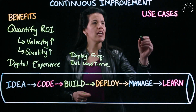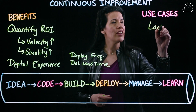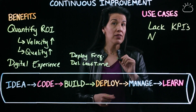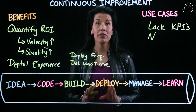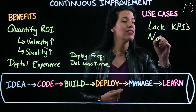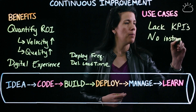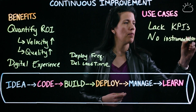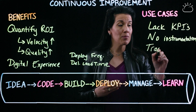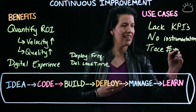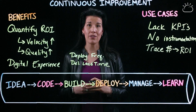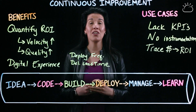To sum all of this up, use cases are really lack of KPIs, lack of or absence of instrumentation in this pipeline to actually gather the empirical data to measure how fast or how defect-free we are — so no instrumentation — and then the lack of being able to trace investment dollars to the return on investment. If you have issues with any of these scenarios, you might need to improve your continuous improvement strategy.